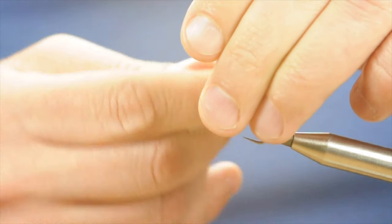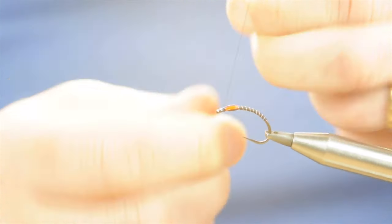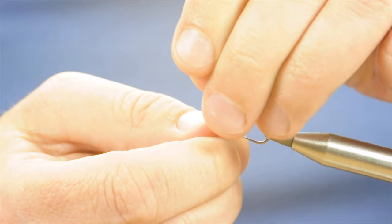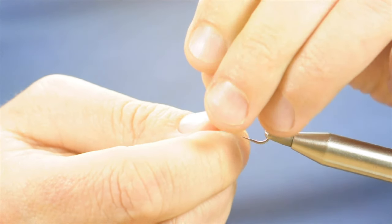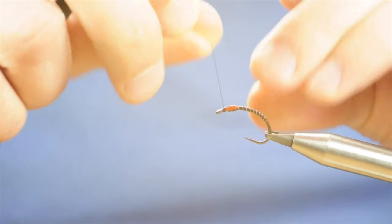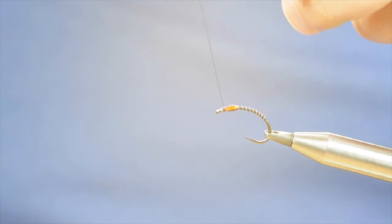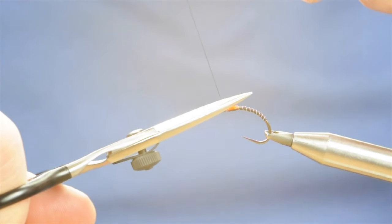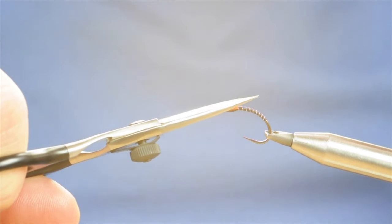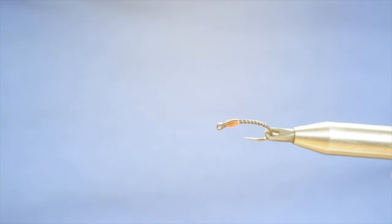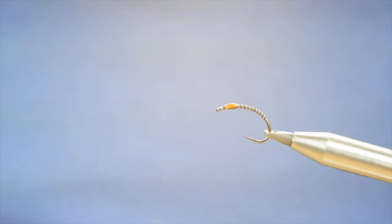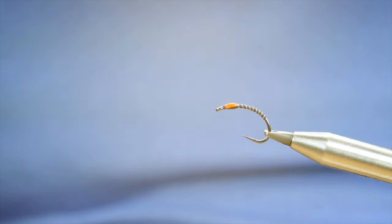And I'm going to put a couple of half hitches in. As I'm sure you're all well aware now, I don't use a whip finish tool. And once that's done, I can trim that away. And let's just loosen that off and let's see what we've got. Yep, happy with that.